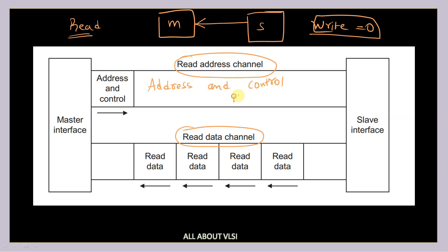After the master sends the address and control information, the slave responds by sending the requested data back to the master using the dedicated read data channel. This channel is separate from the address channel, allowing data to flow independently.